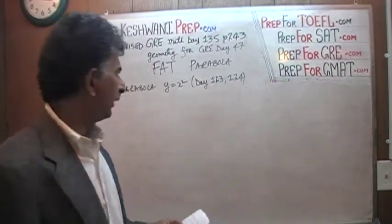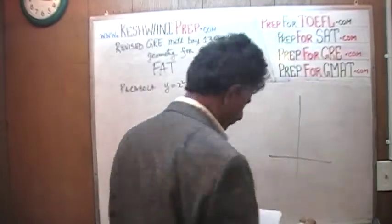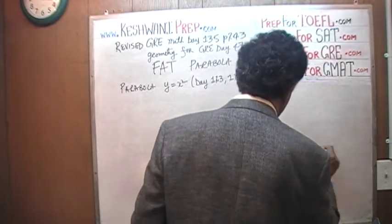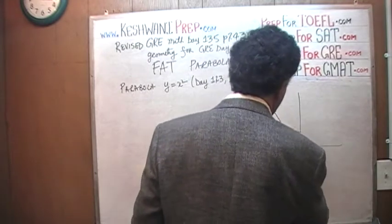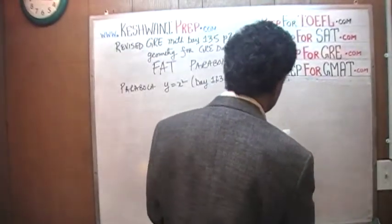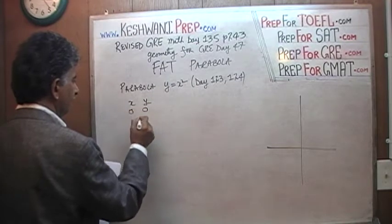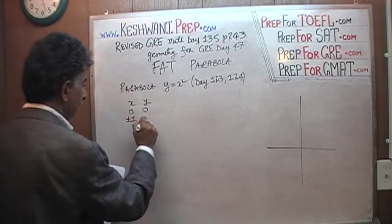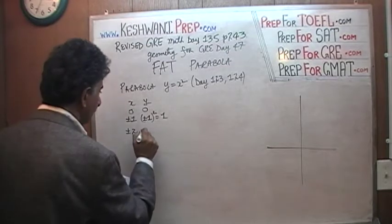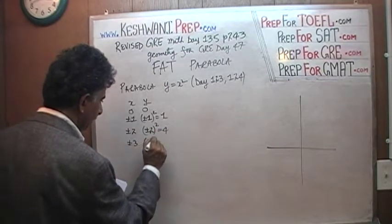What does the graph look like for a standard parabola sitting at the origin? When x is 0, y is 0. When x is positive or negative 1, y is going to be 1 squared, which is simply 1. When x is positive or negative 2, y is going to be 2 squared, which is 4. When x is positive or negative 3, y is going to be 3 squared, which is 9.